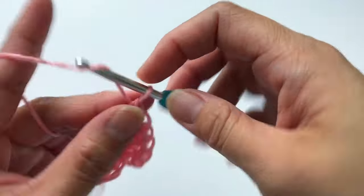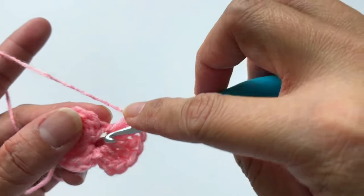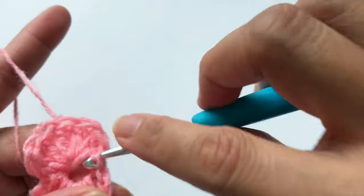Now that we have 5 double crochet, chain 2, and slip stitch at the same loop.